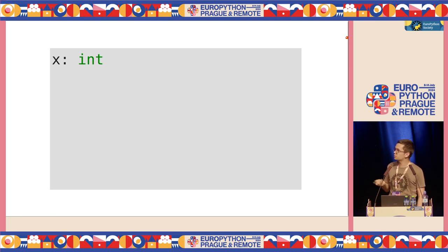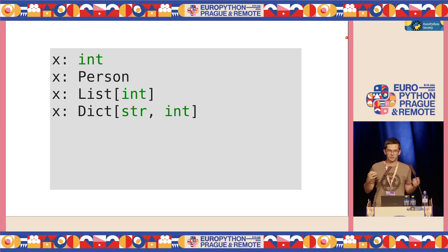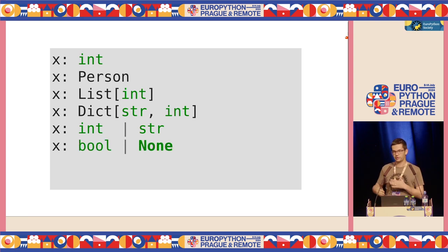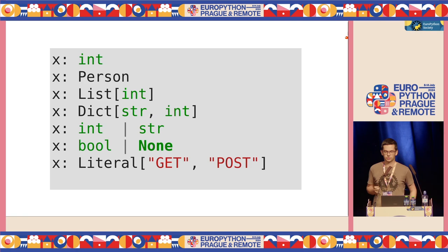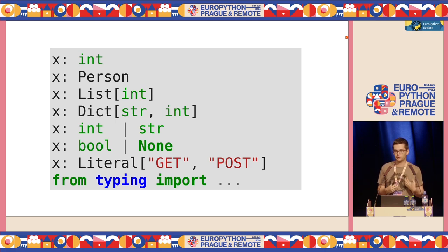What can you use for type hints? You can annotate primitive types like integers and booleans, or your custom classes. You can annotate built-in data types like a list of integers or a dictionary that maps strings to integers. Or you can use more complex things: this value is either an integer or a string, or this value is optional — either a bool or None. You can even say this value is the literal 'get' or the literal 'post' and nothing else. There is a lot you can do with the typing module.